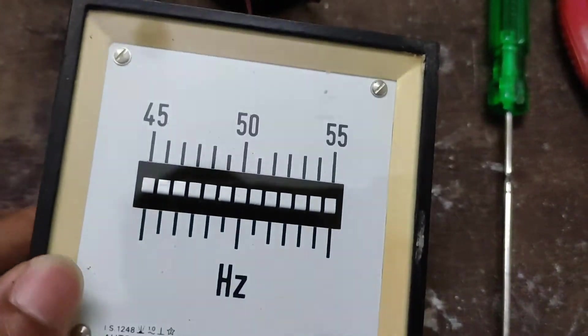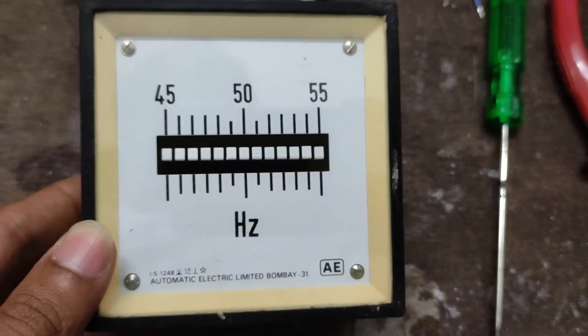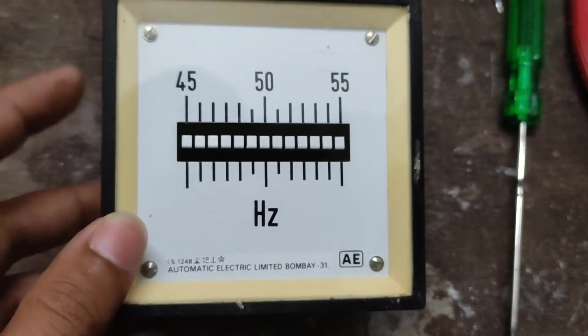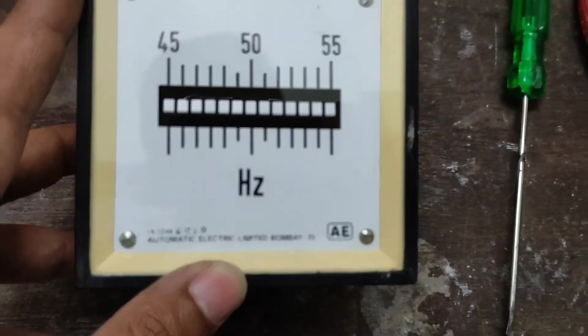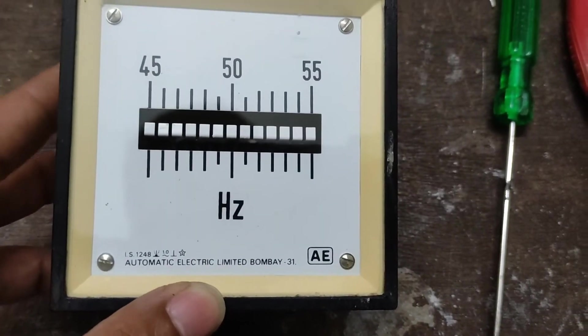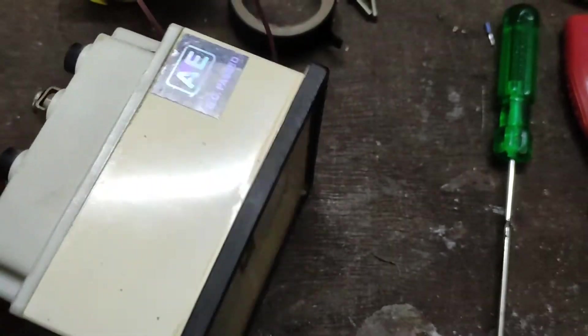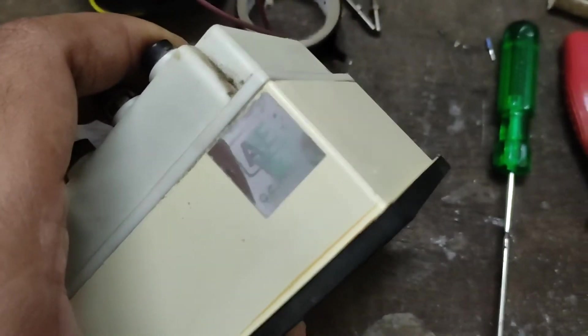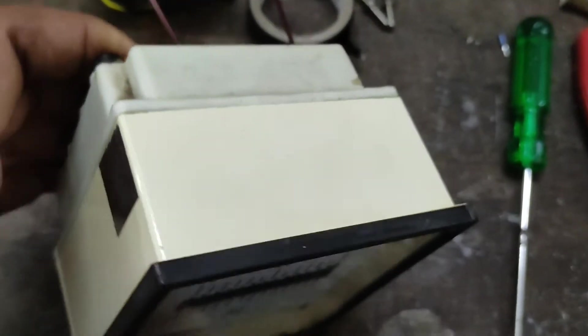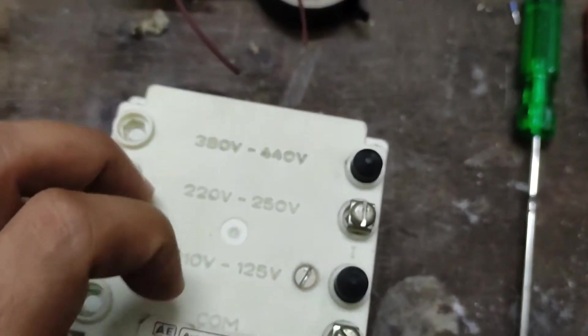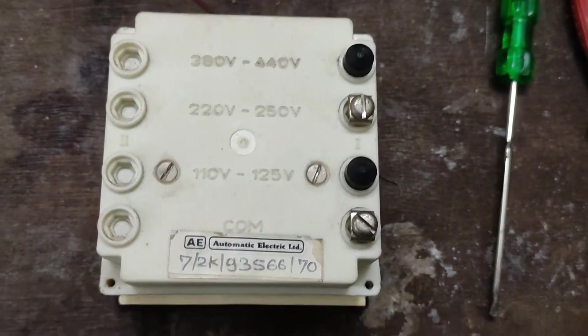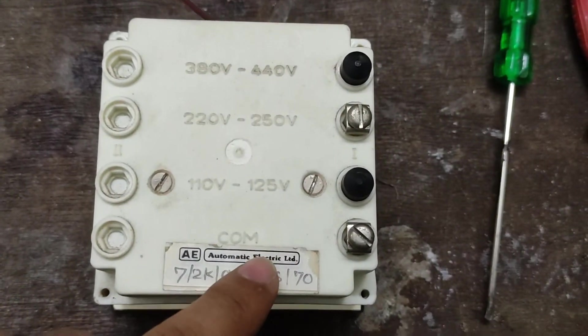You can see all 10 reeds used to represent different frequency markings. This particular meter reads from 45 to 55, but you can purchase these in various frequency ranges from 40 up to 60 hertz. There's nothing special on the sides except the back.